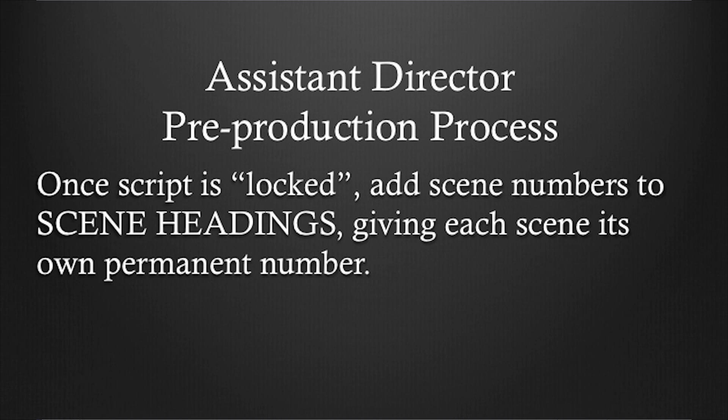In pre-production, once the script is locked — meaning it's not going to be changed — the first thing you want to do is add scene numbers to the scene headings and lock those numbers. They pretty much stay permanent throughout the entire shoot. You're going to give each scene its own permanent number, and it's going to stay that way from the beginning of the shoot once the script is locked.